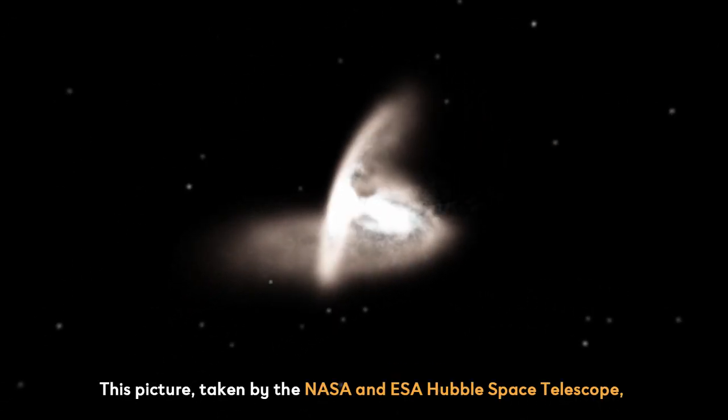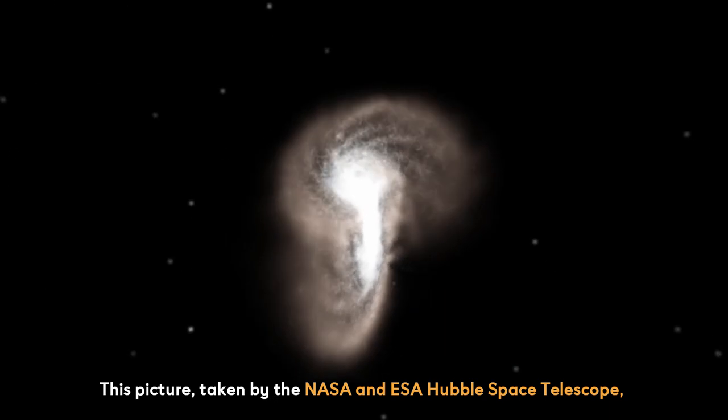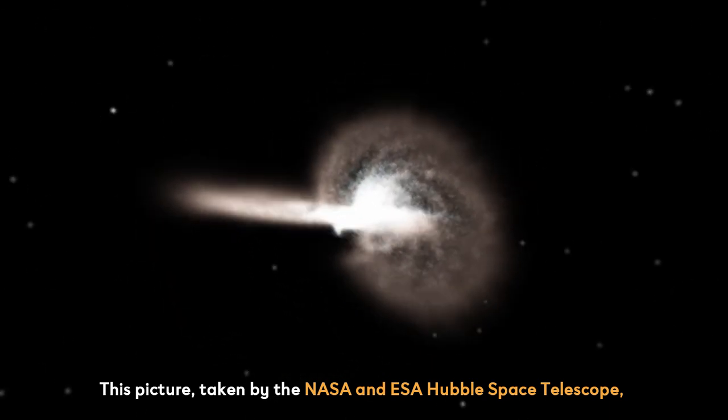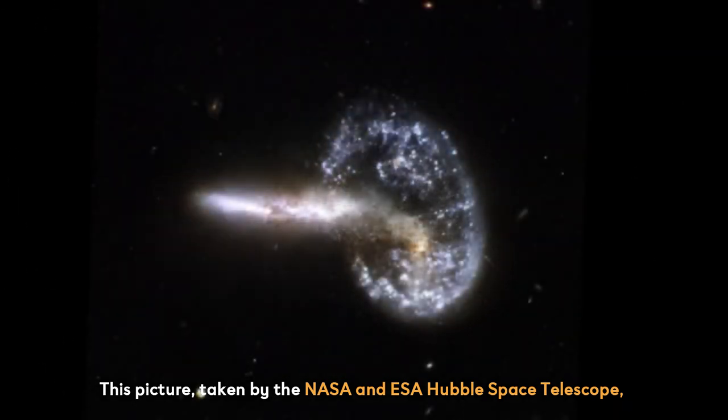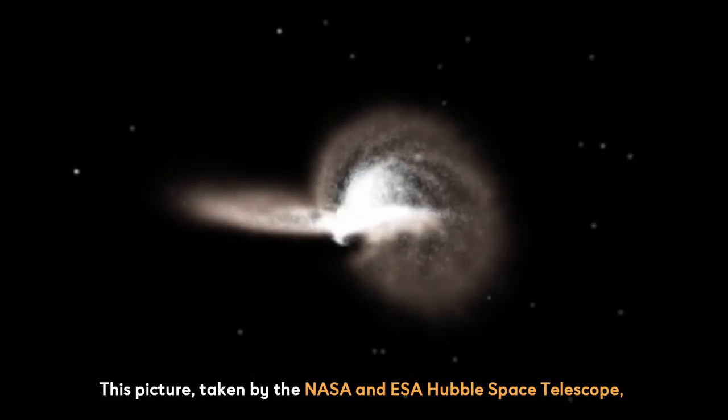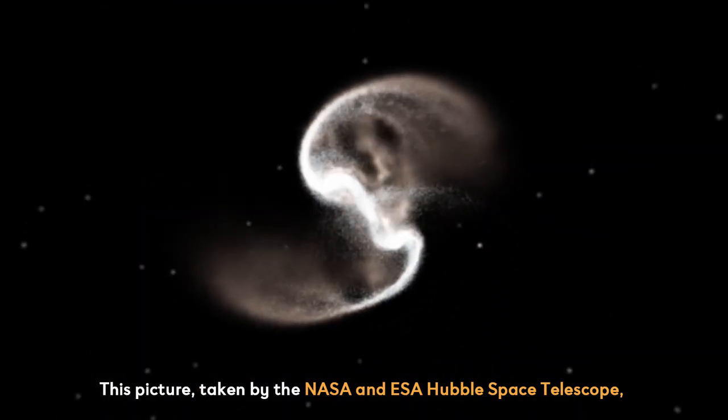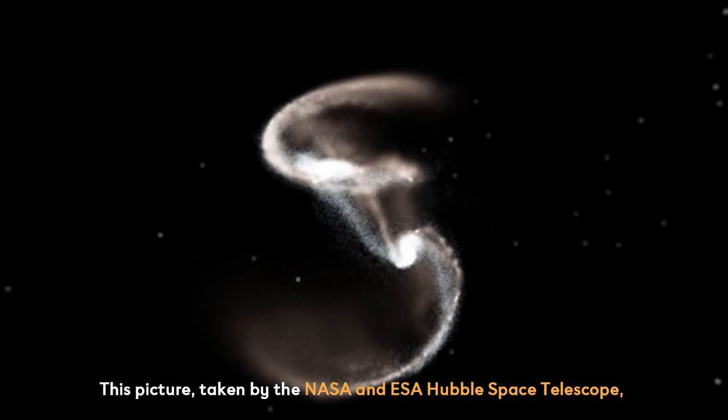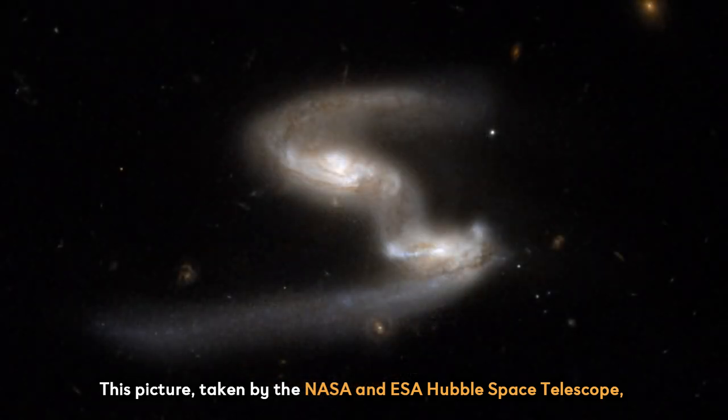As common as these interactions may be, it is very rare to get a picture of two galaxies interacting in this way. This picture, taken by the NASA and ESA Hubble Space Telescope, looks very three-dimensional for a piece of deep space imagery.